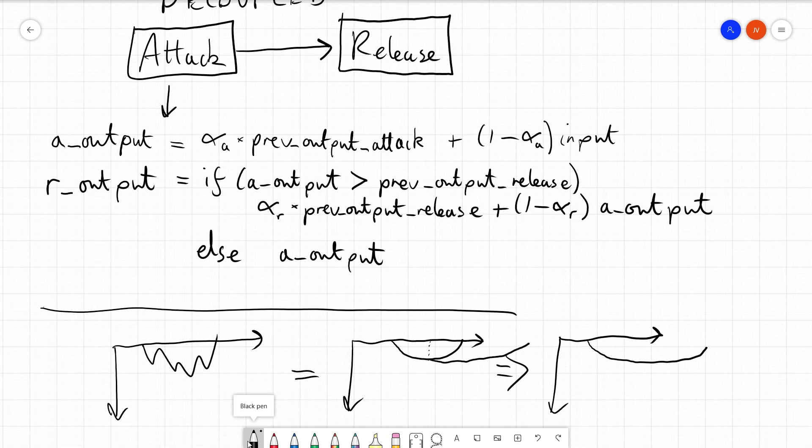This effectively means that the release stage has its own instantaneous attack stage. So what does this mean? This means that we have an attack stage which doesn't care which direction things are going and always smooths, and then we have a release stage which has its own instantaneous attack, but then if we are releasing, we then smooth that out.